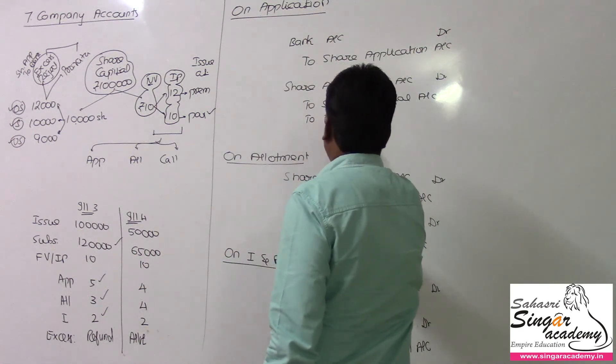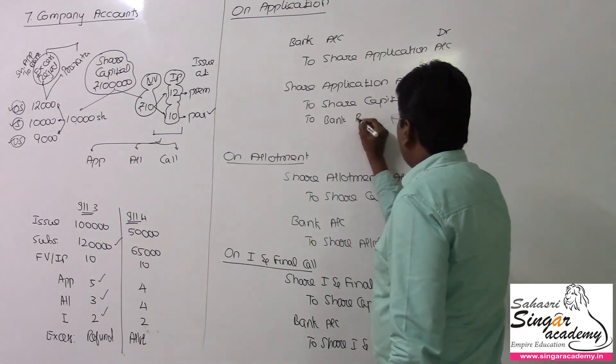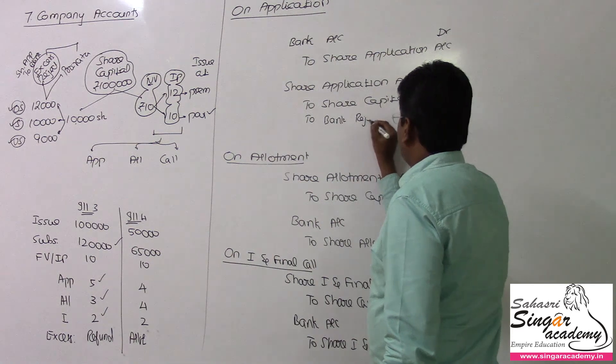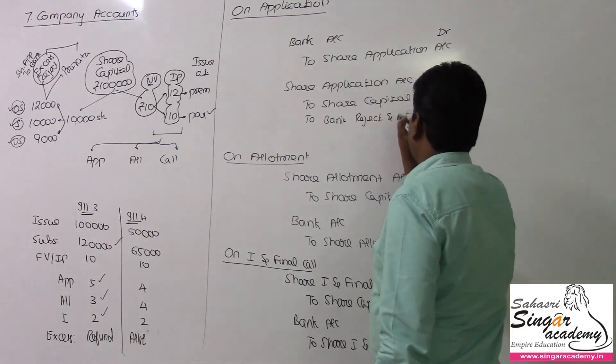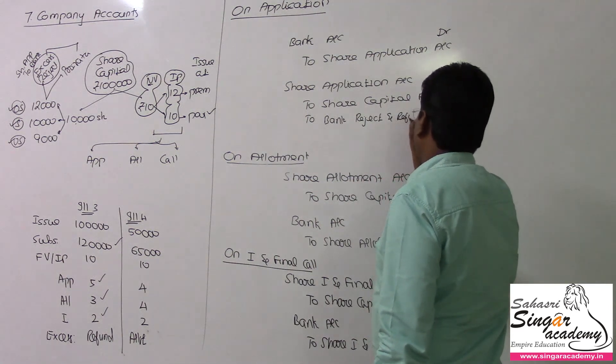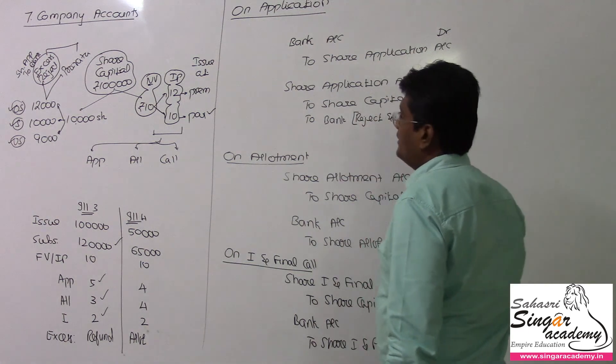This is the rule: reject and refund case. In the reject and refund case, share application account to bank account — that entry is the extra one we need to note here.